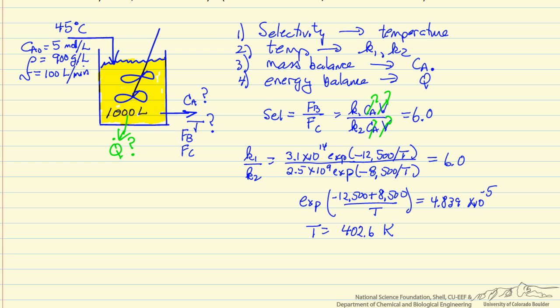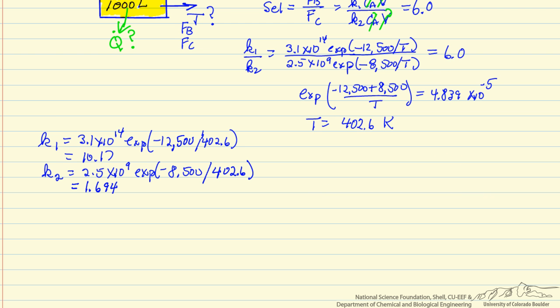Now we can go back and calculate the values of the rate constants by substituting temperature into the exponential. So here are the values for k1 and k2. We of course have to use absolute temperature in the exponential. And then it's always good to check if we look at the ratio of k1 over k2. This is indeed 6.0.